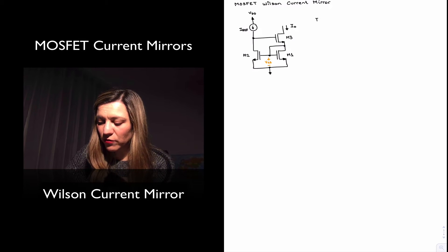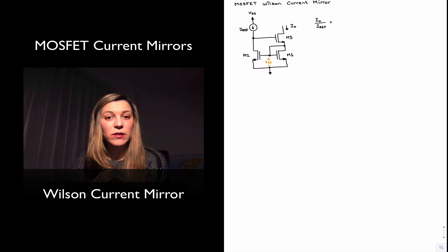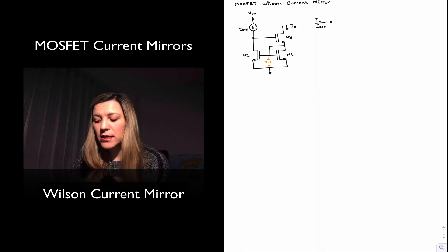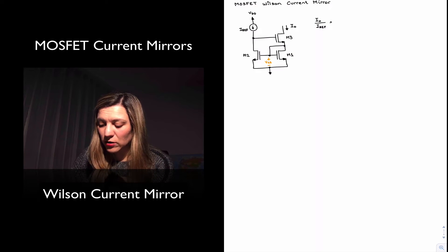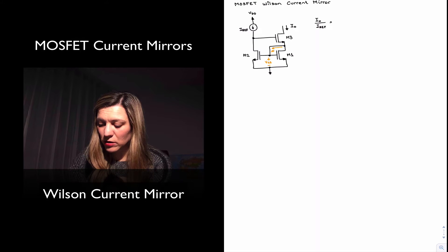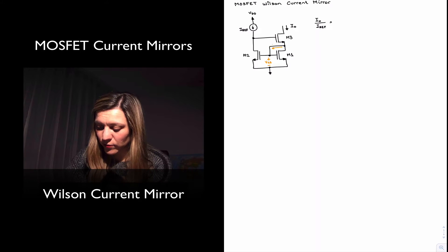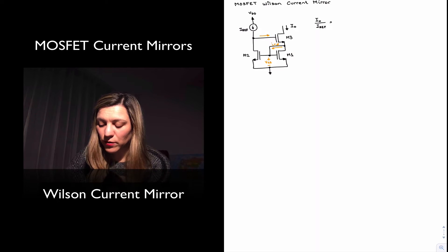In terms of the ratio of IOUT to IREF, in this case we will notice that for transistors of the same size, in the case of the MOSFET, we won't have any beta errors being introduced as we had in the case of the BJT, because in this case, the current flowing through the gate is actually equal to zero. And so that means that the current flowing through this branch is equal to zero. As well as the current flowing into the gate of M3 is equal to zero.